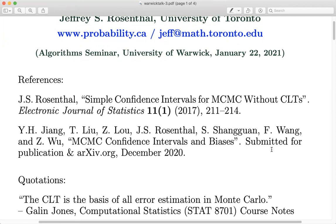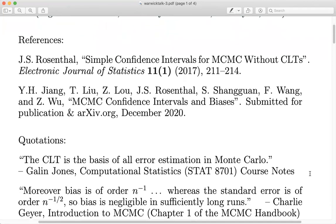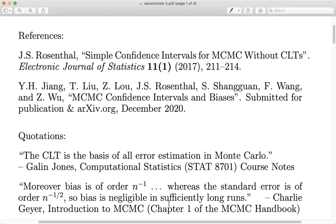I first started thinking about this a few years ago when I was at a talk and somebody said, of course, we need to show a central limit theorem if we want to talk about accuracy of MCMC. I was thinking: if you don't have a central limit theorem, how could it go too wrong? That's when I started thinking — what if we can't verify a CLT? What can we still say about the accuracy? That's the theme here.